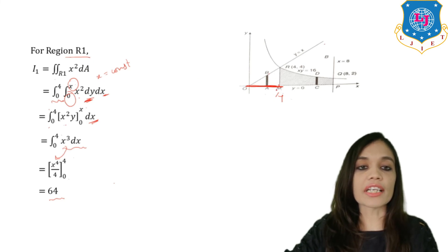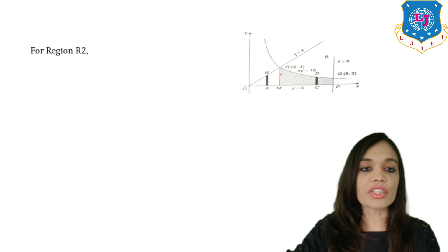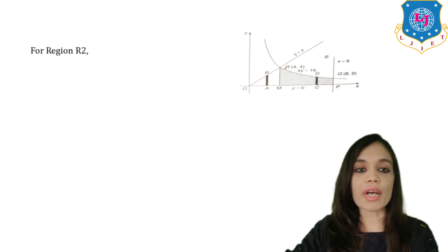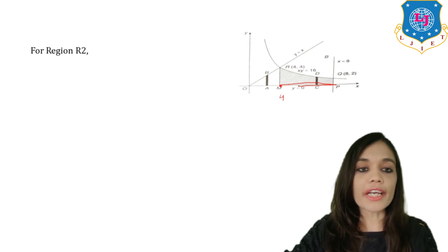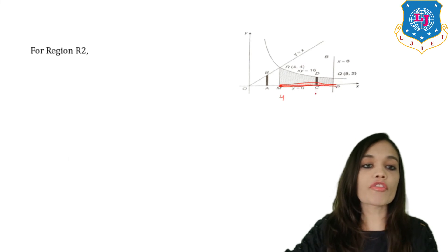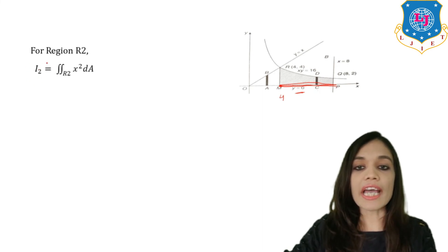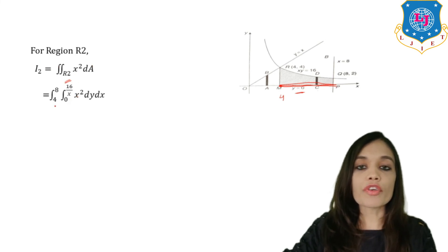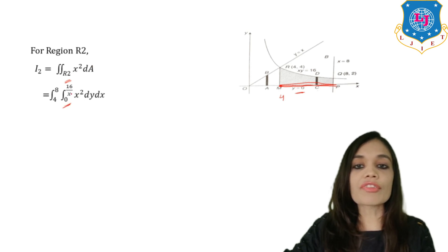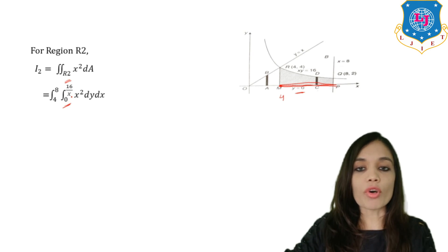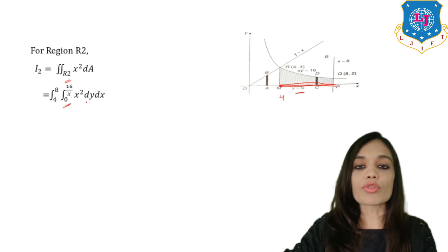Now let us consider region R2, which is the part MRQP. For region R2, the limits of x are from 4 to 8, and the limits of y are from 0 to 16/x. So our integral I2 equals the double integral over R2 of x² dA, with inner limits of y from 0 to 16/x, and outer limits of x from 4 to 8. We integrate first with respect to y, then x.